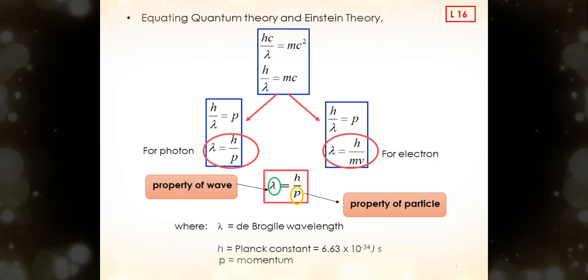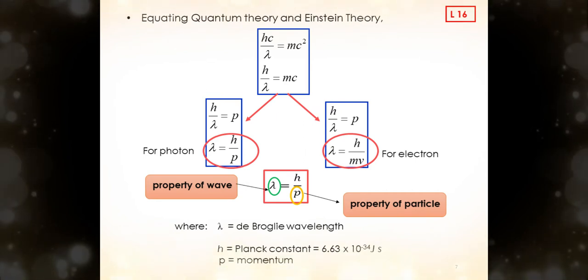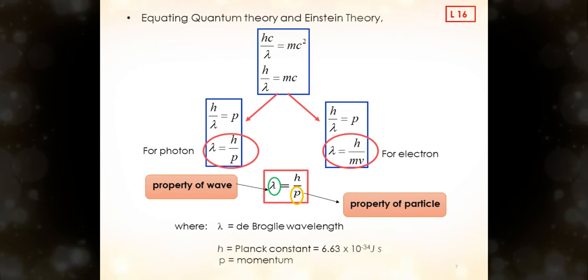By equating the equation from quantum theory and Einstein's theory, we can get h times c over lambda equals m times c squared. We cancel the c on both sides, then the equation will be h over lambda equals m times c. We know that the velocity of photon is equal to c. Therefore, the equation for photon now is lambda equals h over p. Please keep in mind that we can calculate the momentum p for photon, but we cannot determine the mass for photon since the photon is massless.